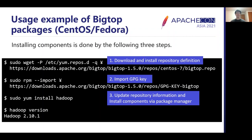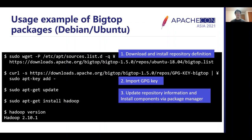Installing the repository definition and components is easily done in three steps. Here's an example for CentOS and Fedora. First, download and install the repository definition from the ASF site, changing the Big Top version and Linux distribution in the download URL for your environment. Next, import the GPG key to ensure downloaded files are correct. Finally, run the package manager to install component packages. In the case of Debian and Ubuntu, the required steps are the same: install repository definition, import GPG key, and run the package manager.